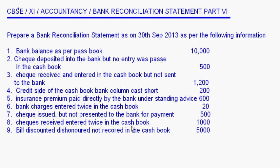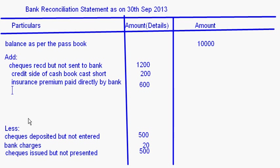Seventh: checks received entered twice in the cash book. The check received is 1000 rupees but it has been entered twice, so the cash book shows 2000 rupees. The cash book balance is more than the bank balance by 1000 rupees. Since the cash book balance is more, this should be added. Checks entered twice: 1000 rupees.